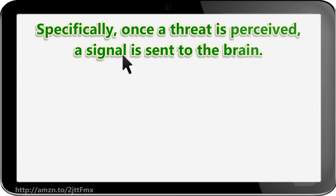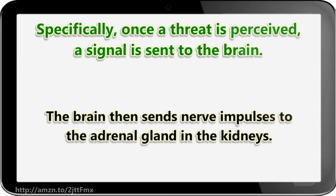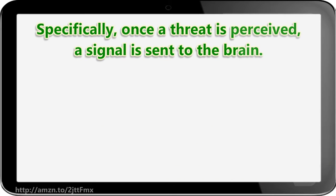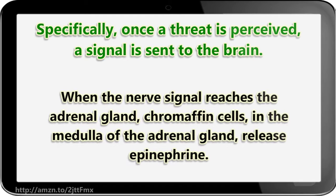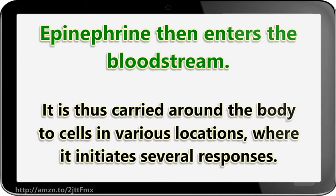Specifically, once a threat is perceived, a signal is sent to the brain. The brain then sends nerve impulses to the adrenal gland in the kidneys. When the nerve signal reaches the adrenal gland, chromaffin cells in the medulla of the adrenal gland release epinephrine. Epinephrine then enters the bloodstream and is carried around the body to cells in various locations, where it initiates several responses.